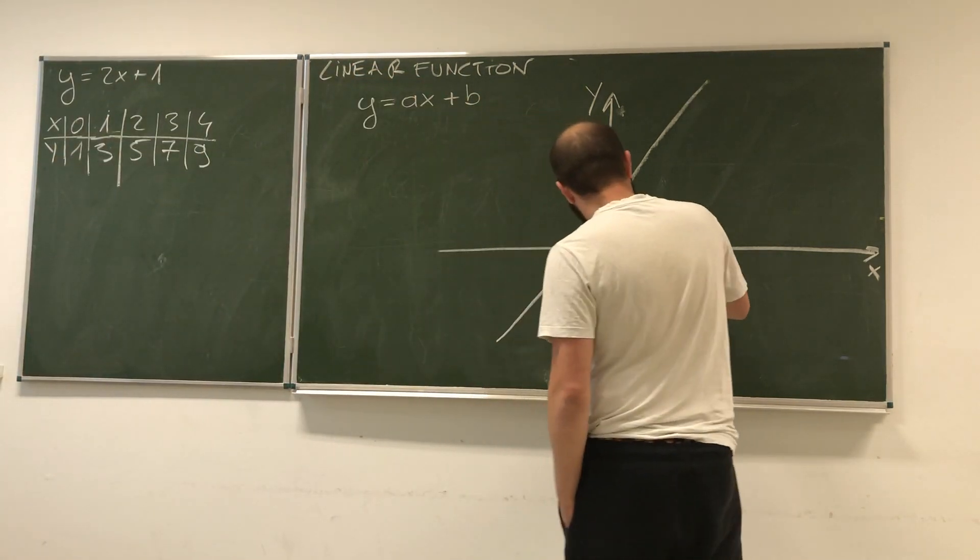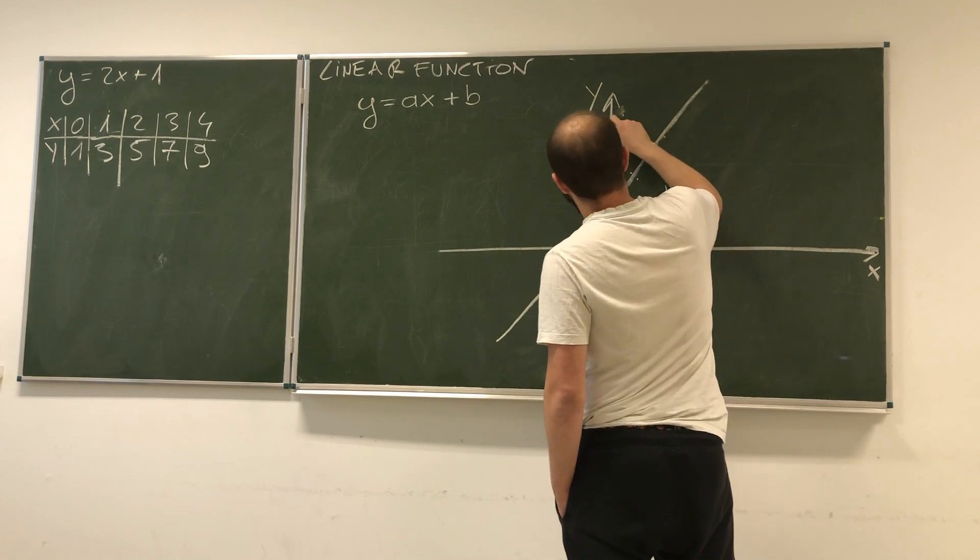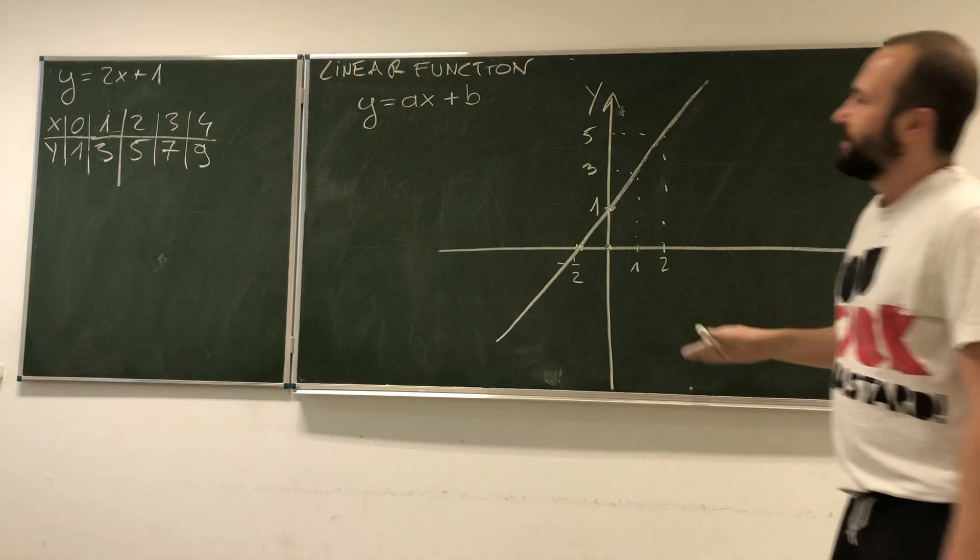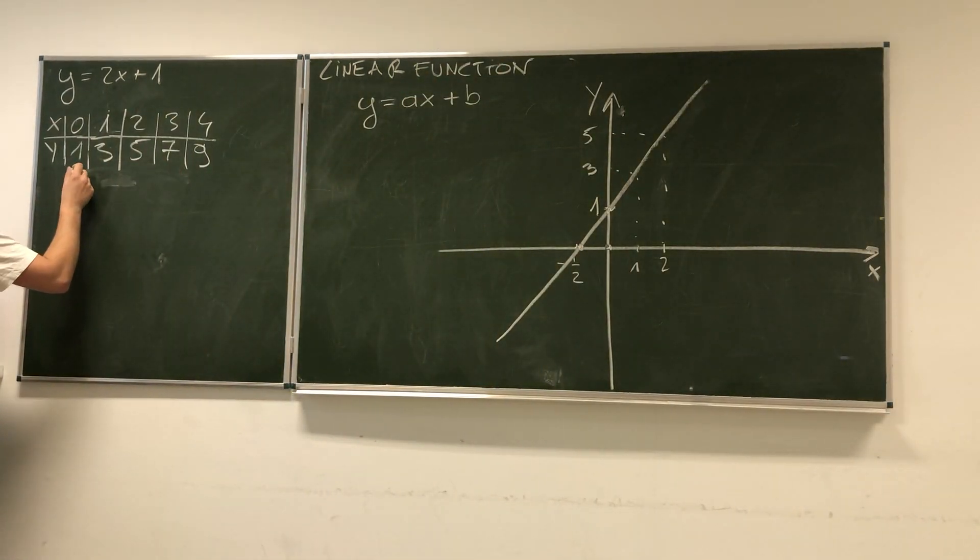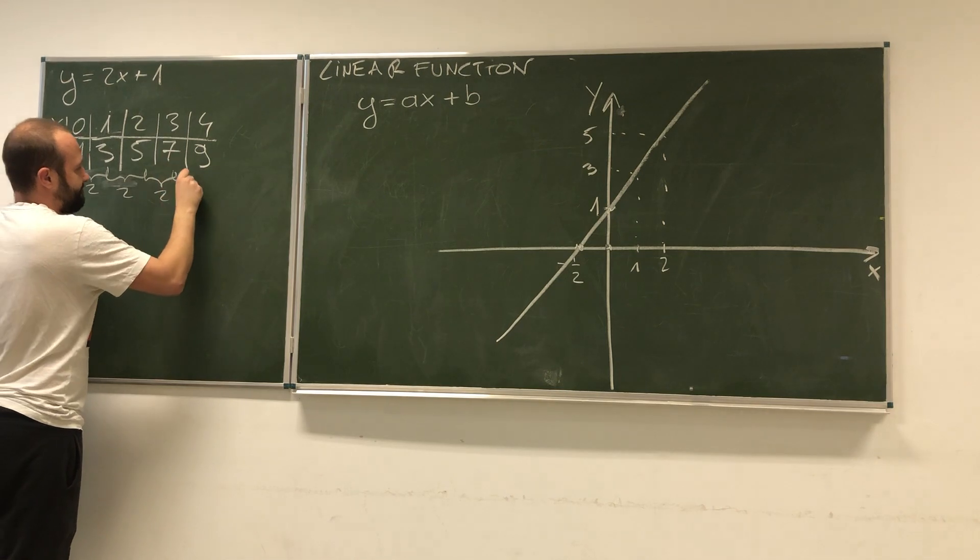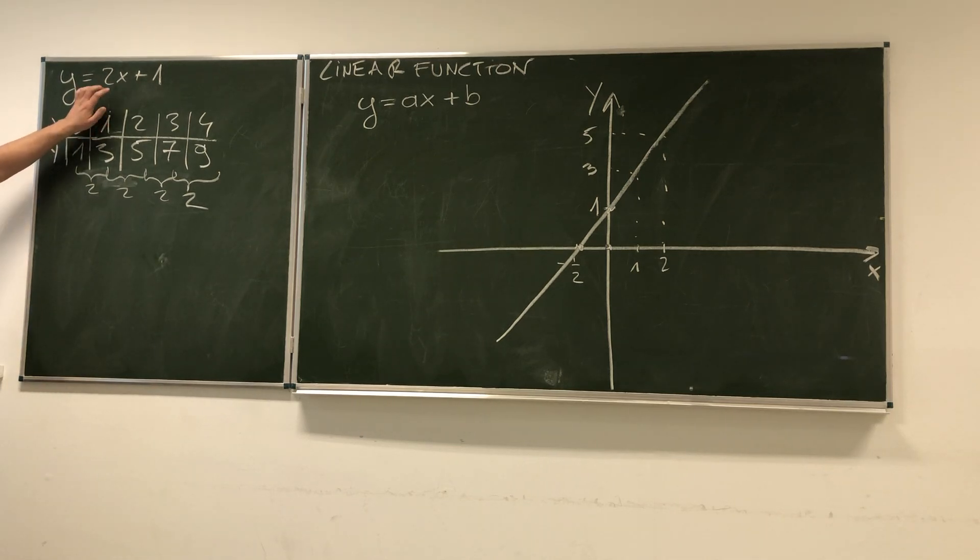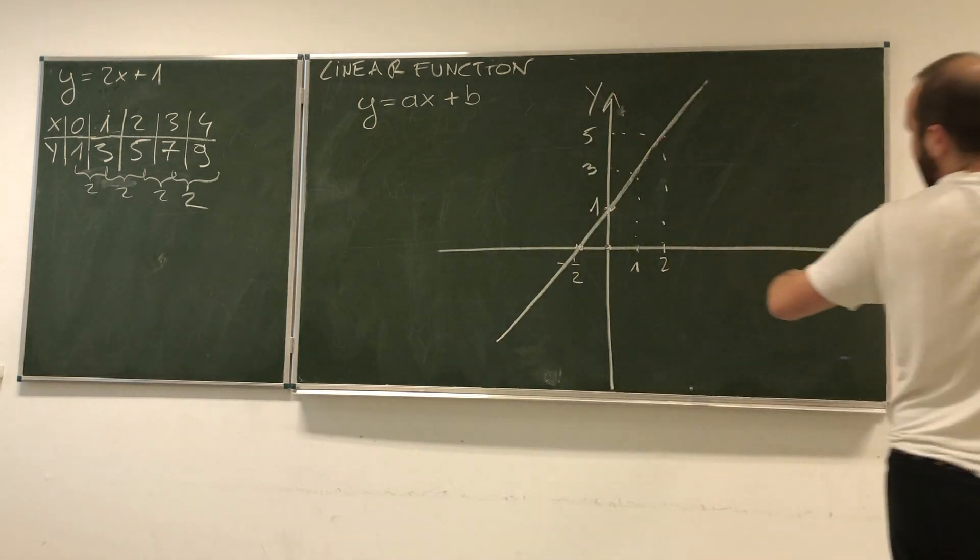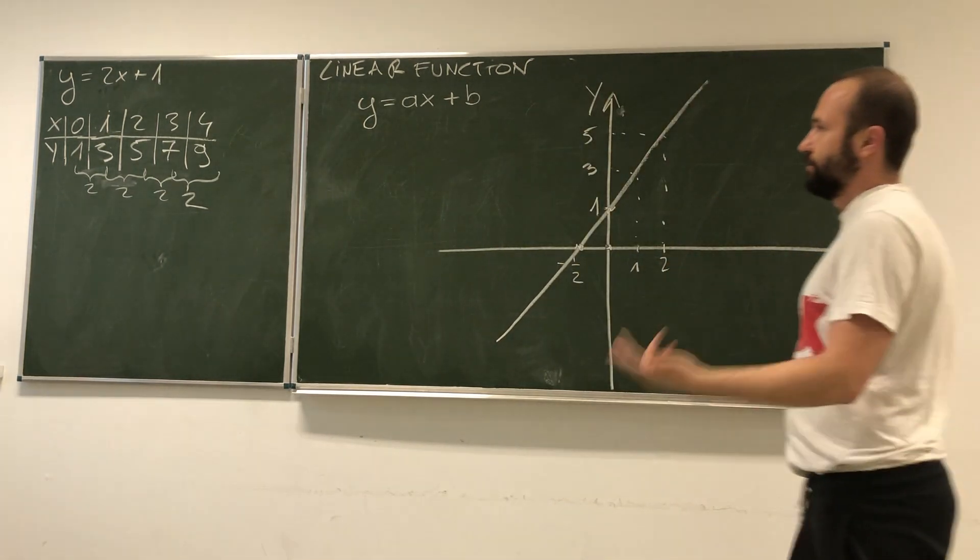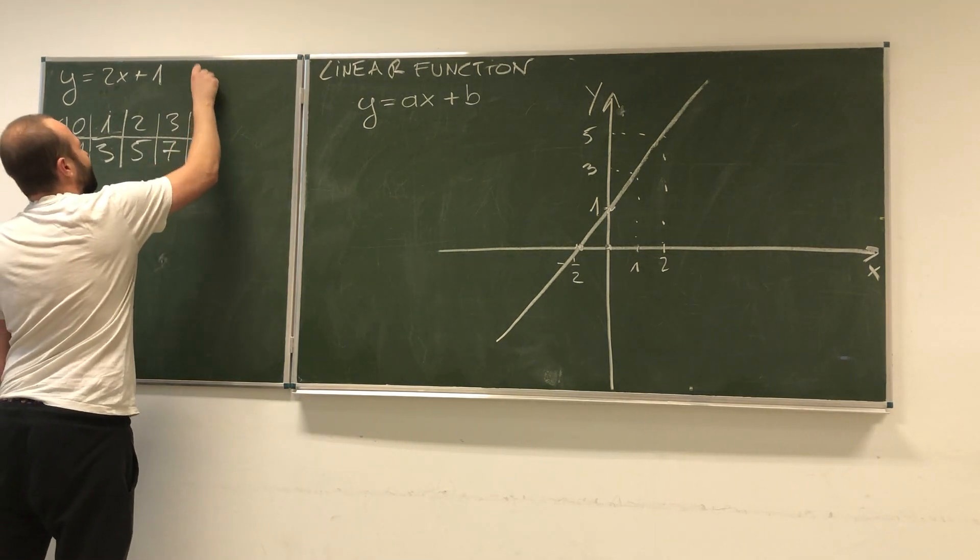We can see that when x is 1, y is 3. When x is 2, y is 5. Each time when x increases by 1, y increases by 2. Where did we get this 2? This tells us that each time when x increases by 1 unit, y increases by 2 units. Let's draw a different example to see more about this function.